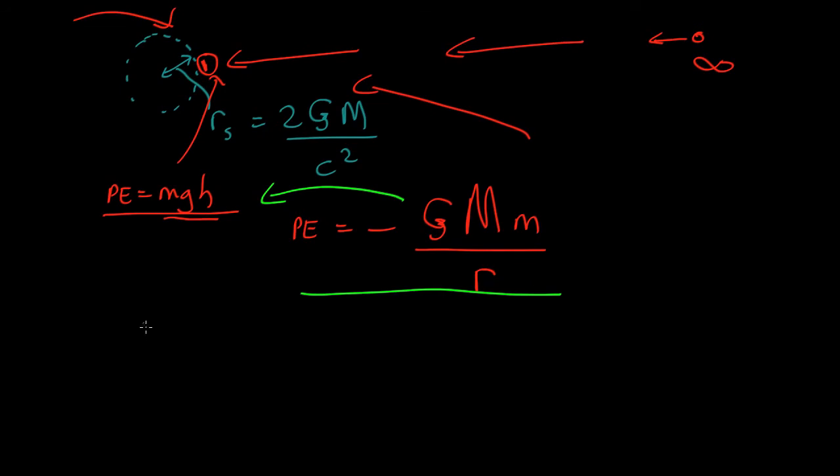So at infinity, potential energy at infinity, r is infinity, so that equals zero. Potential energy at the Schwarzschild radius, the event horizon, equals minus GM black hole, m of whatever you're dropping in, over the Schwarzschild radius, r_s.